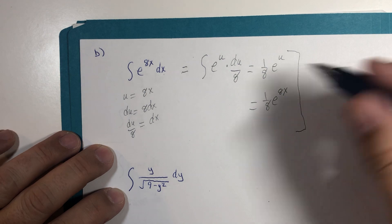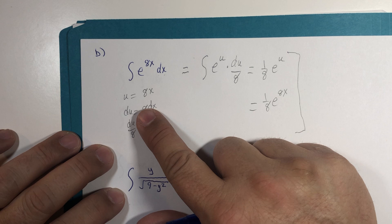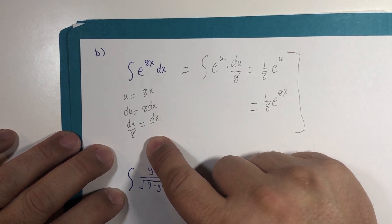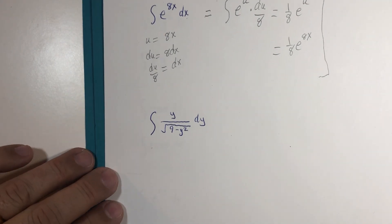But we started with x, we don't end with u: one-eighth e to the 8x. My expectations are that you should be able to integrate something like this using pretty much mental math, but for those moments when you do get stuck, showing the u substitution is the emergency parachute so to speak.